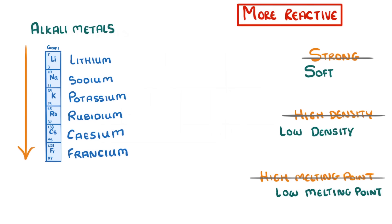As you go down the group, the elements become even more reactive, with caesium being so reactive that they can ignite spontaneously at room temperature.